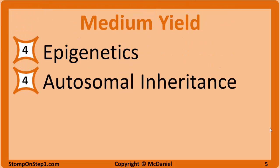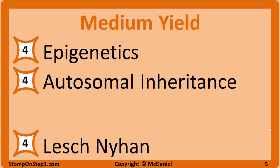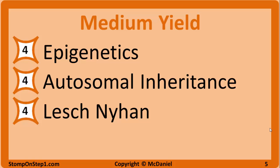With a high yield rating of 4, we have autosomal dominant inheritance. You want to know the difference between dominant and recessive, some high yield diseases with this type of inheritance, how to calculate risk to different generations, and how to identify a pedigree with autosomal dominant inheritance. Also with a high yield rating of 4 is Lesch-Nyhan syndrome — know the genetic defect and the clinical presentation.